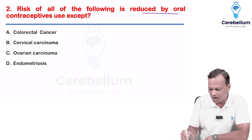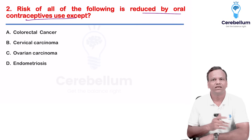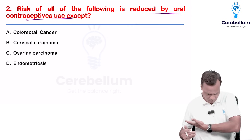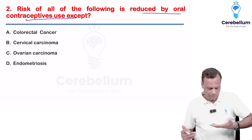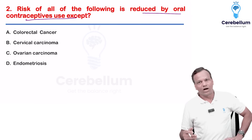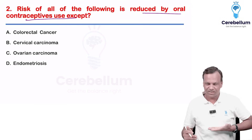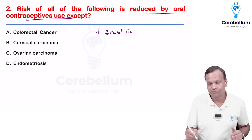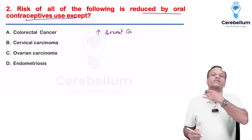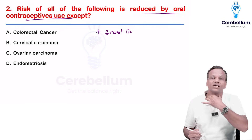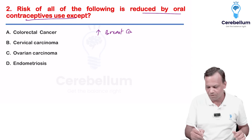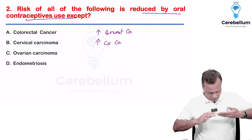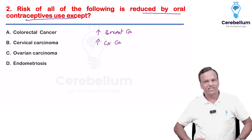Next: risk of all cancers is reduced by oral contraceptives except which one? Remember, divide the body from the diaphragm — upper cancers go up, lower cancers go down. Above the diaphragm we have breast, so there is increased risk of breast cancer. There is also increased risk of cervical cancer. Below that, all cancers decrease.